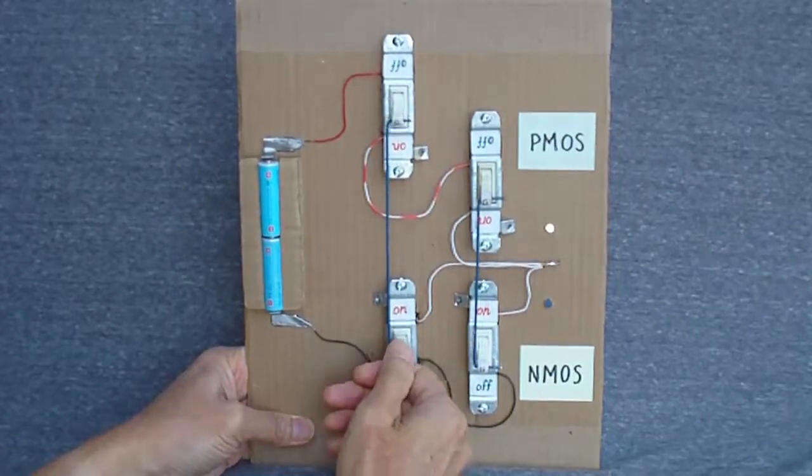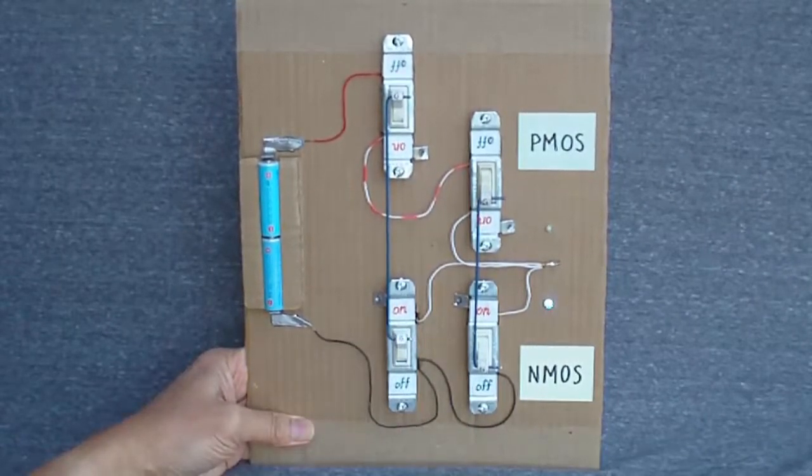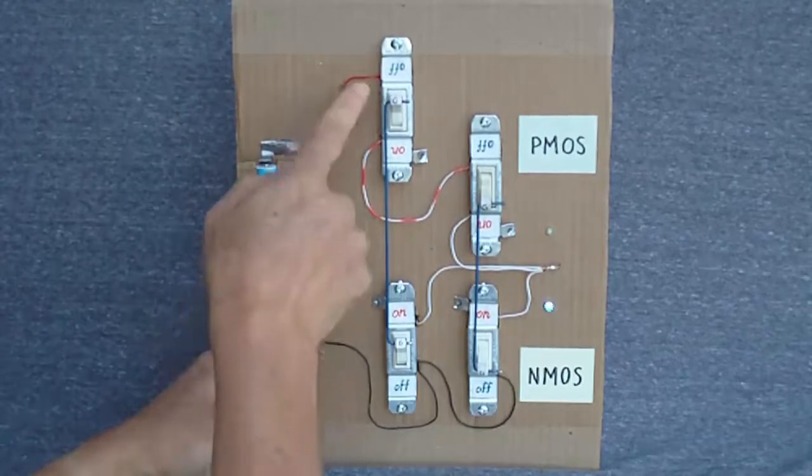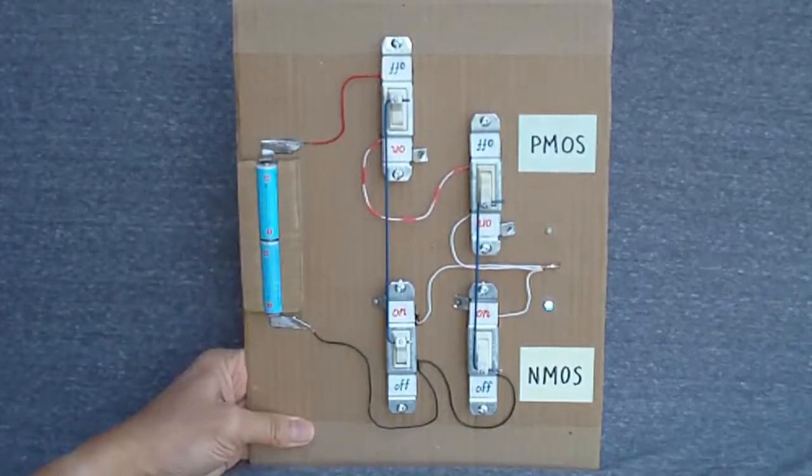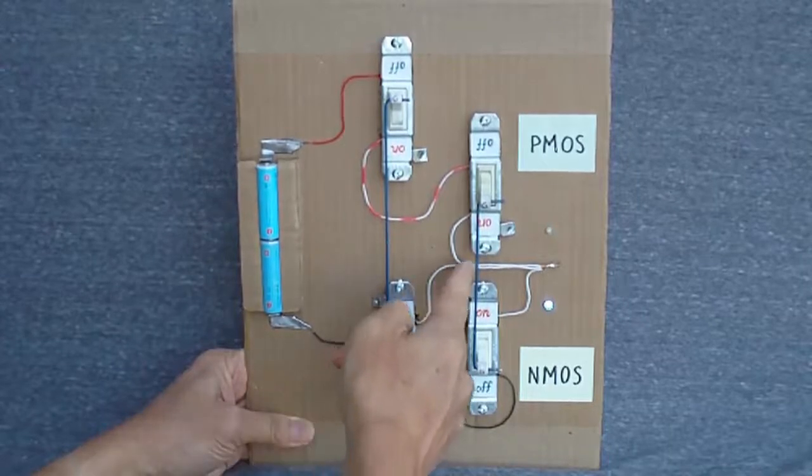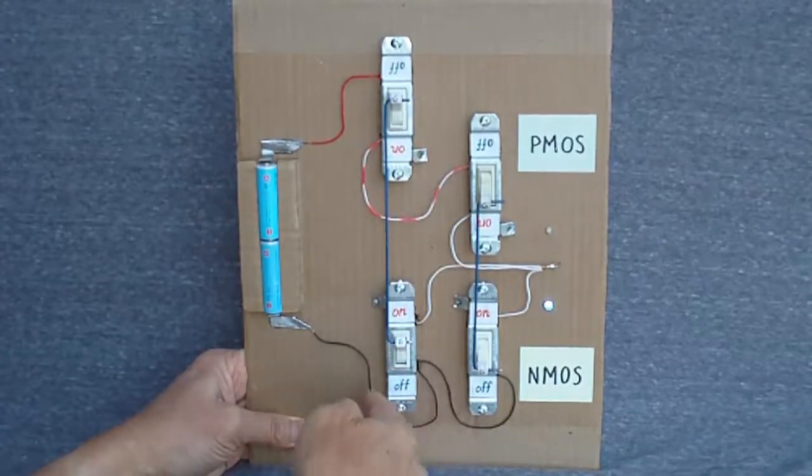If the first input is high while the second is low, the output is cut off from the power supply because the first PMOS transistor is turned off. The output is connected to ground through the first NMOS transistor, so the output is low or logic zero.